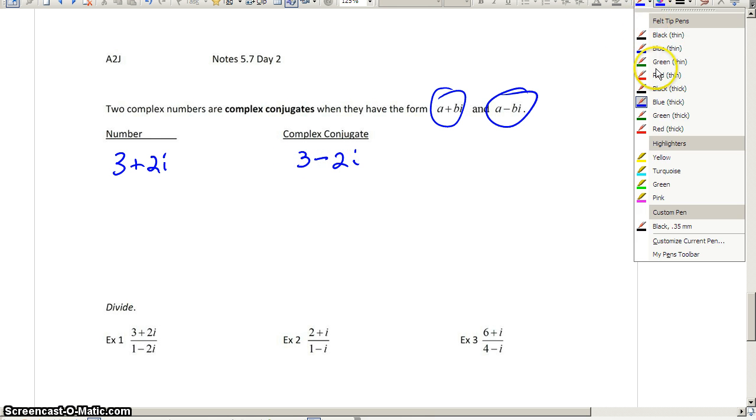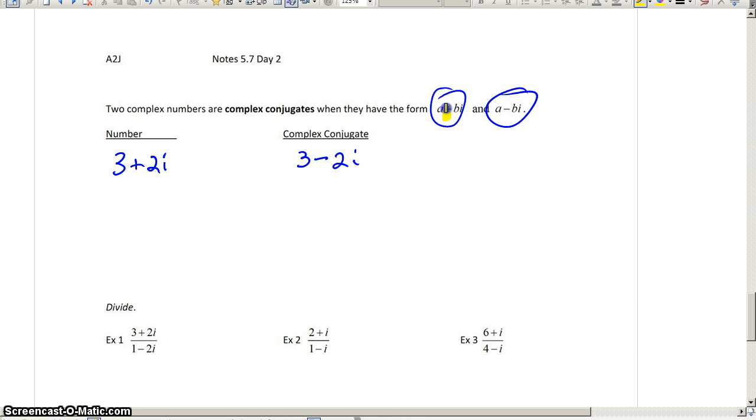Something I want to make sure is crystal clear is conjugates always look exactly the same with one huge difference. The sign in between the numbers changes. If you have a plus in between your terms when you write the conjugate, there would be a subtraction.